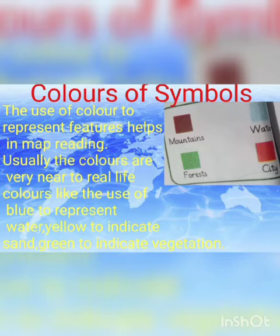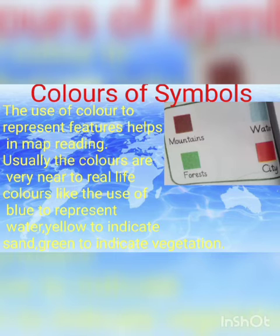Usually the colors are very near to real life colors. Blue color water کو represent کرتا ہے۔ Yellow color جو ہے وہ sand کو — یعنی کہ ریت کو — indicate کرتا ہے deserts میں۔ Green to indicate vegetation — یعنی forest کے لیے جہاں پر زیادہ greenery ہوتی ہے۔ Brown is for mountains and red color is used to indicate cities. These colors are used on maps to easily identify the features.